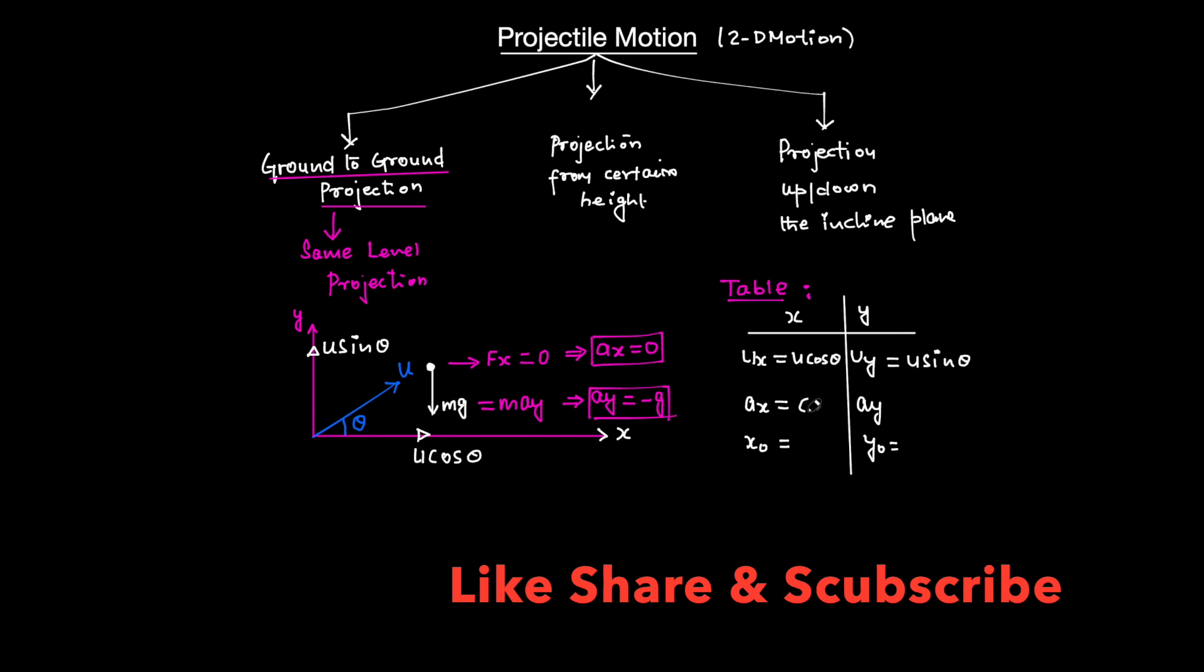The acceleration in the x-component is always zero, and in the y-component is always -g. The minus sign indicates the opposite direction. The third important thing is that from where your particle is projected, assume that as the origin. The benefit is that the initial position always comes out to be zero, and zero always makes our calculations very simple.